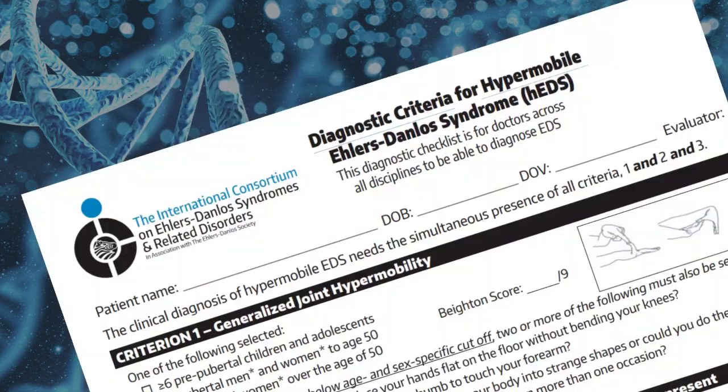Most doctors are able to diagnose EDS, but the experience of many patients is that their primary physicians will not diagnose. They see a geneticist or rheumatologist and get genetic testing to rule out other disorders and certain types of EDS. It may be helpful to print the diagnostic criteria and take it to your primary care doctor, because not everyone is very familiar with it. I've put a link to it in the description.